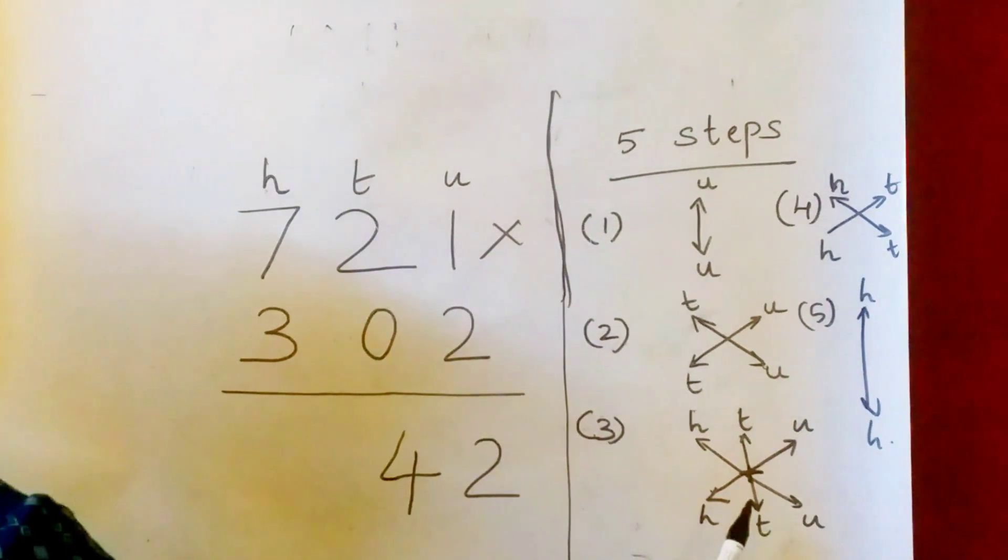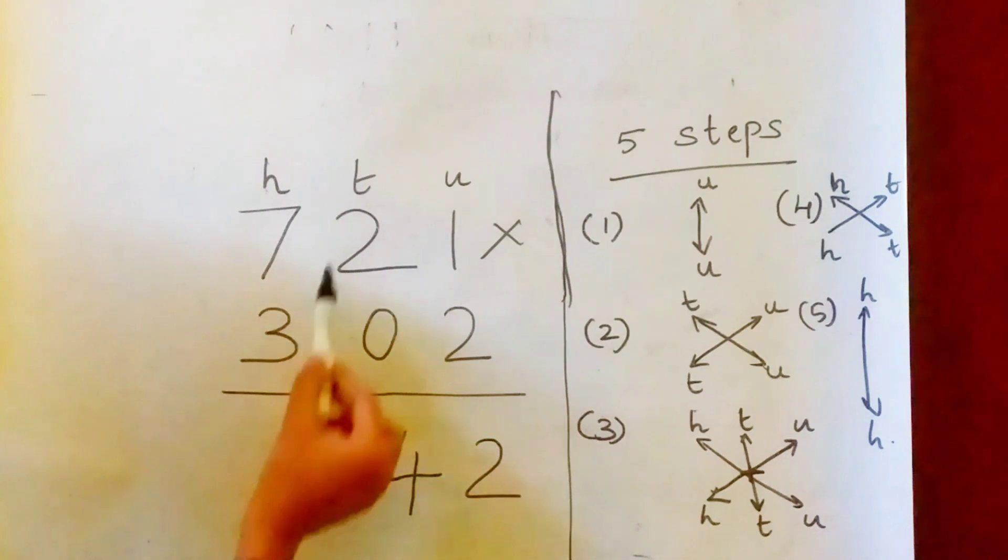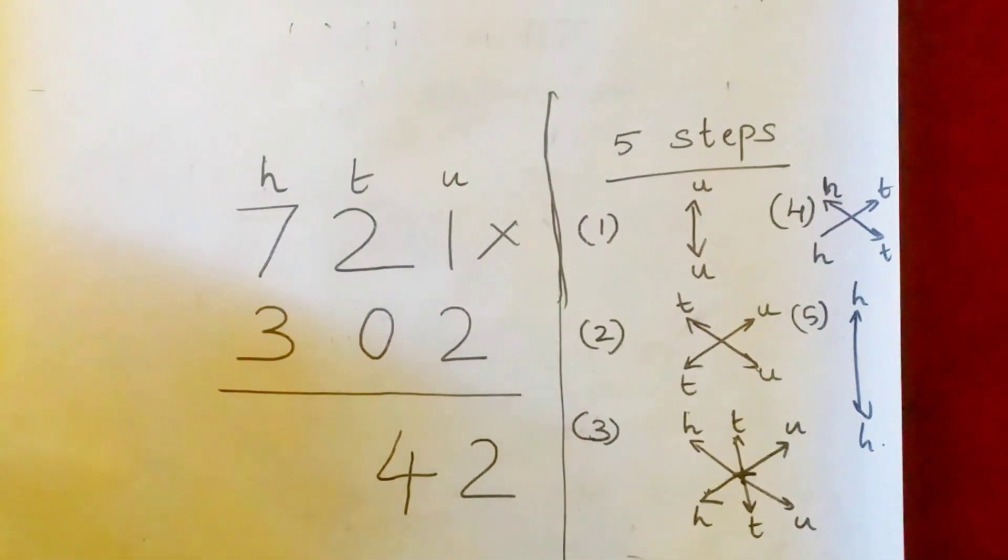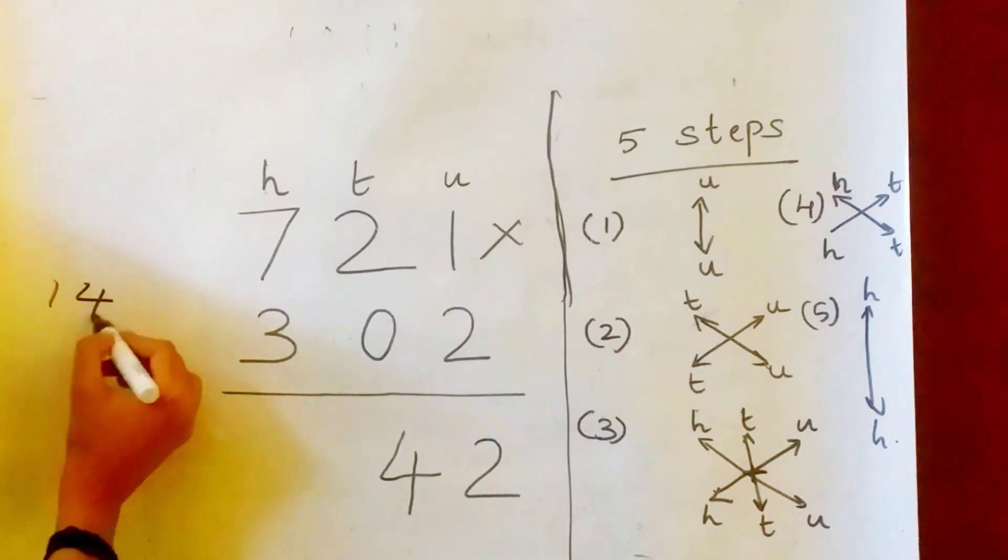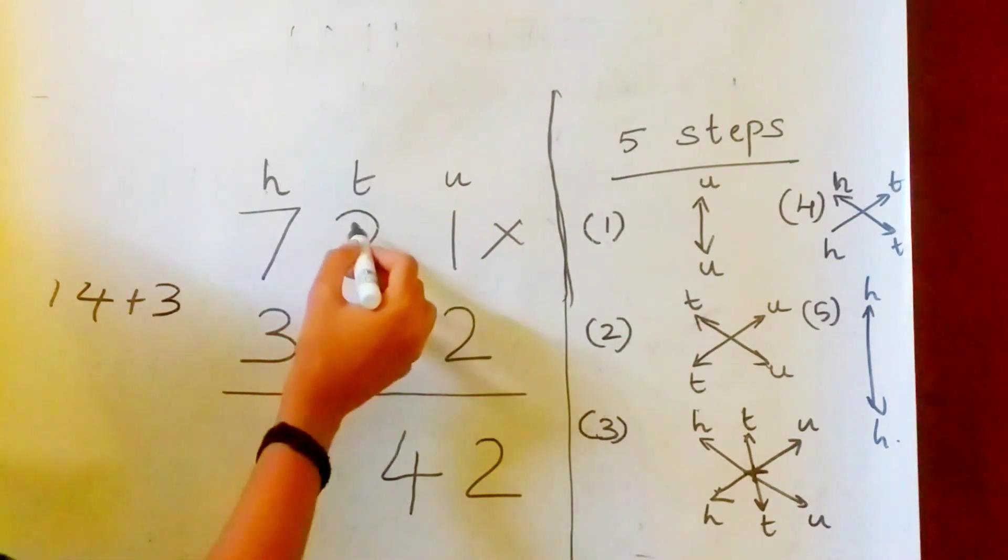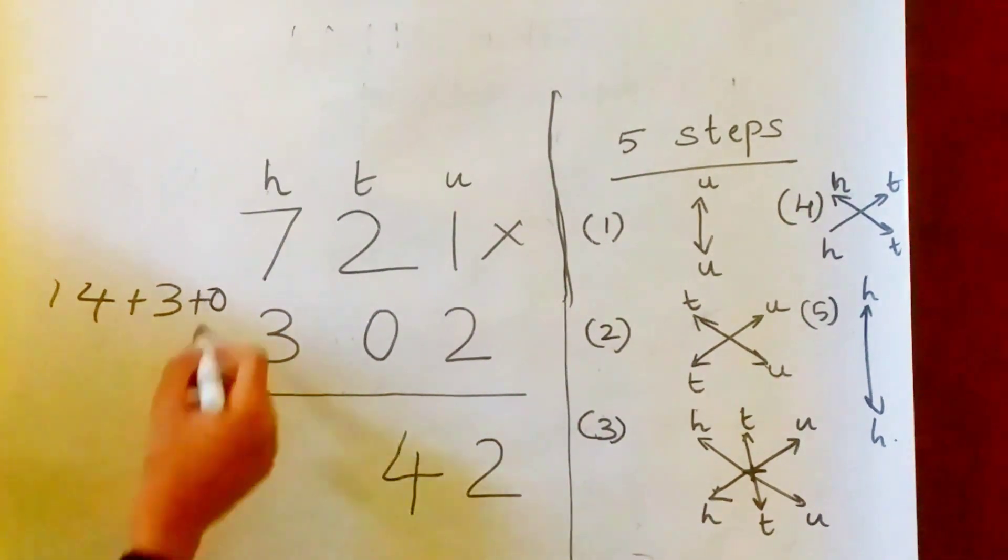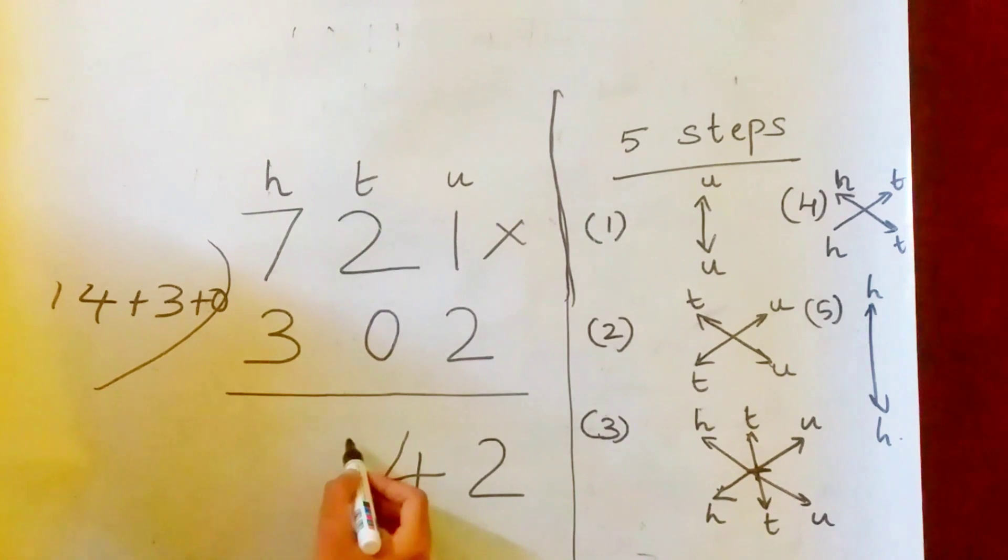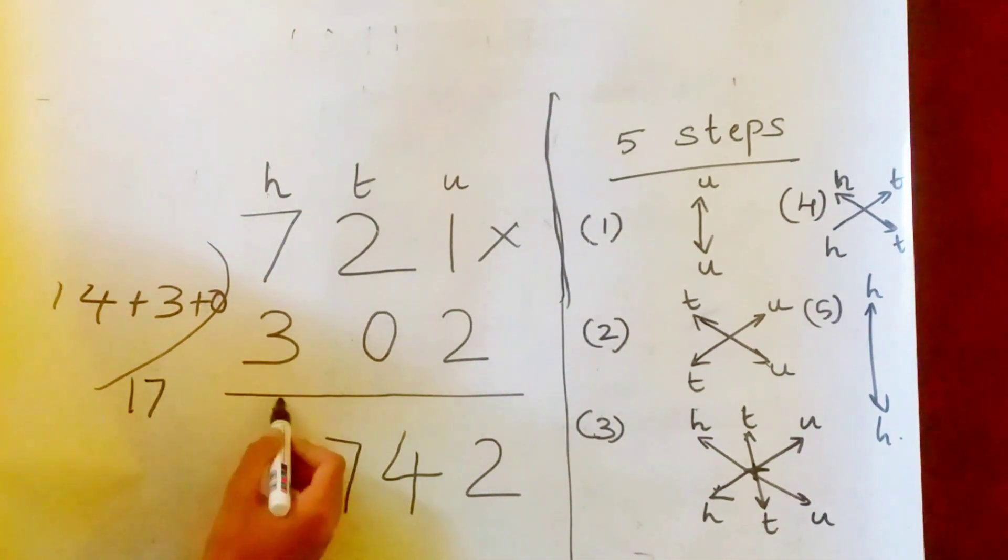What is the third step? H to U, U to H, T to T. And we are taking the sum. So 7 into 2, 14 plus 1 into 3, 3 plus 2 into 0, 0. What is 14 plus 3? 17. Don't write 17 here. Write only 7. And 1 will be the carry to the next number.